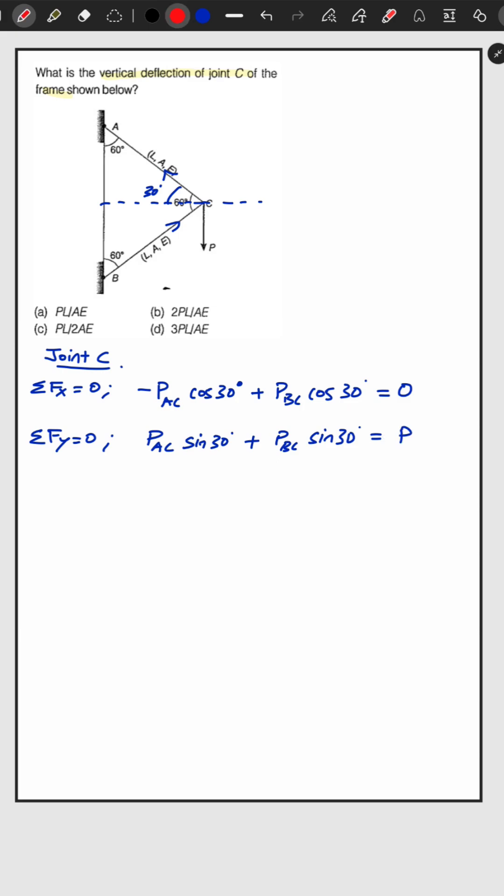So from the first equation we can get the result as PAC is equal to PBC. Now we can apply this in the second equation. So it will be 2PAC sin 30 degrees equal to P. So PAC is P and it will be equal to PBC. So we found out the force at joint C.